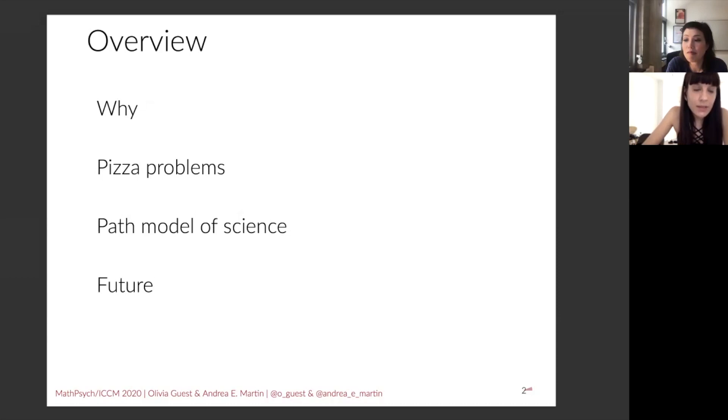Then we're going to get to the main idea that we want to share with you, which is our path model of psychological science. And then we want to give some ideas about what the future might hold and what changes we might be able to do in the present in order to incorporate computational modeling into wider psychological science.